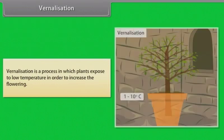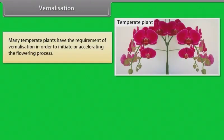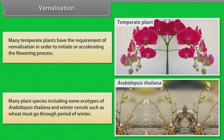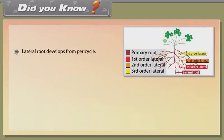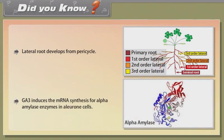Vernalization: Vernalization is a process in which plants are exposed to low temperature in order to increase flowering. Many temperate plants have the requirement of vernalization in order to initiate or accelerate the flowering process. Many plant species, including some ecotypes of Arabidopsis thaliana and winter cereals such as wheat, must go through a period of winter. Many biennial species have a period of vernalization which can vary in temperature. Did you know: Lateral root develops from pericycle. GA3 induces the mRNA synthesis for alpha-amylase enzymes in aleurone cells.